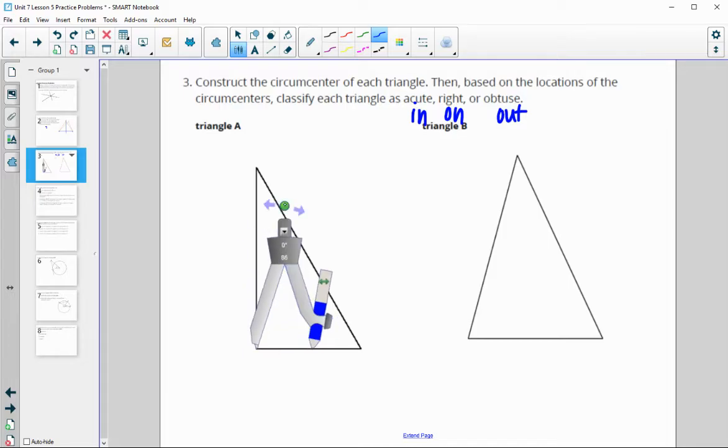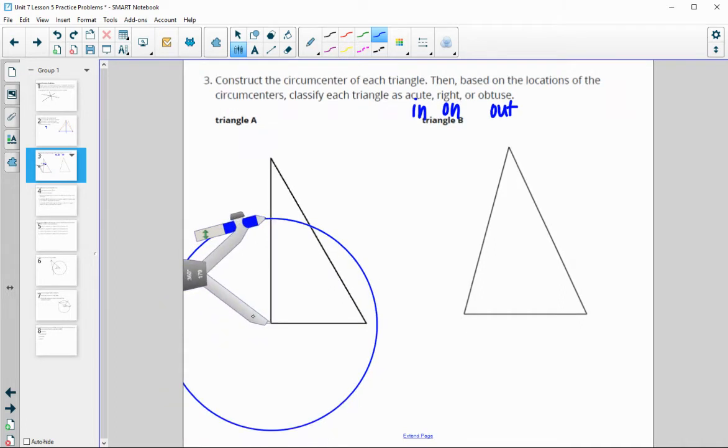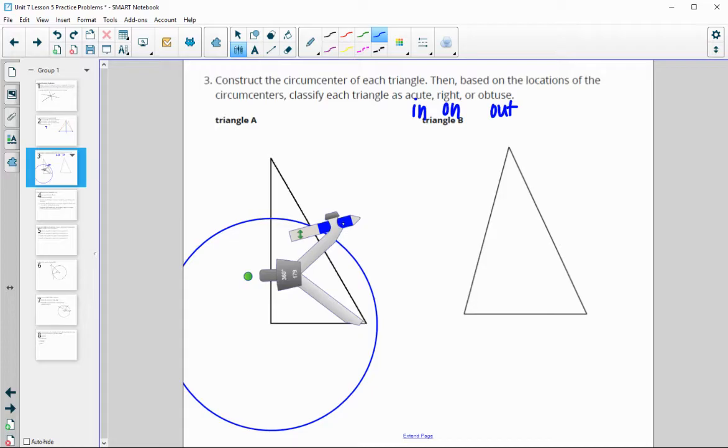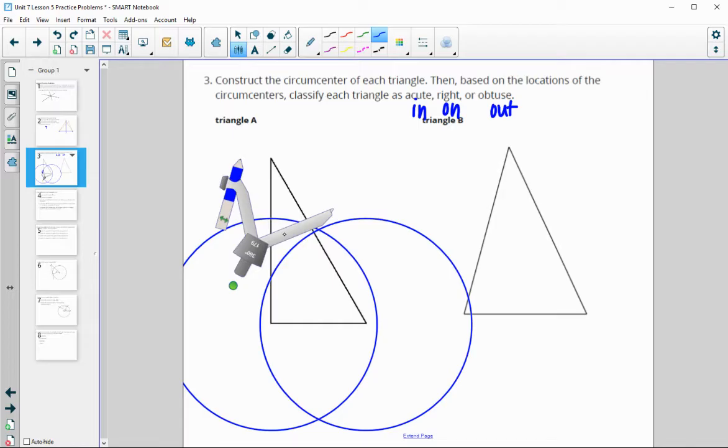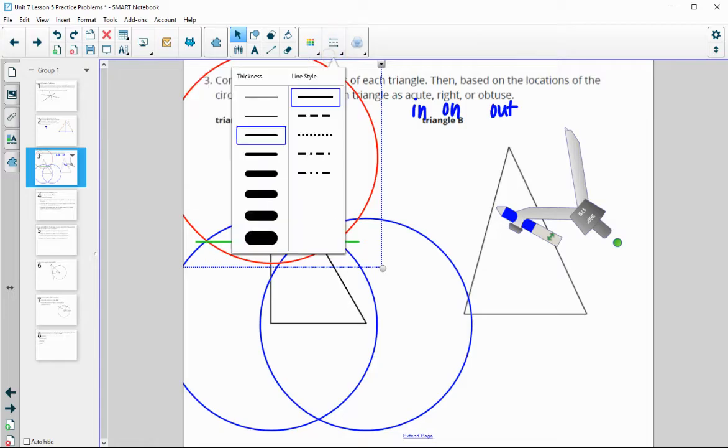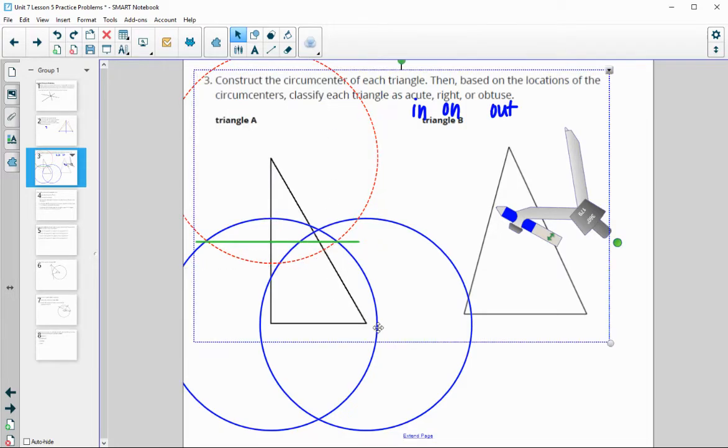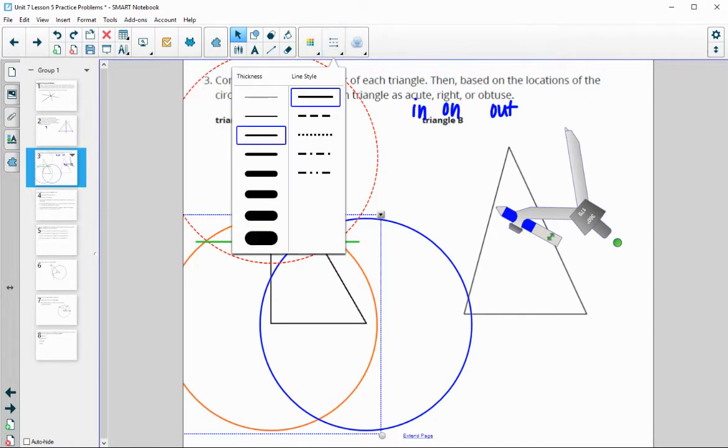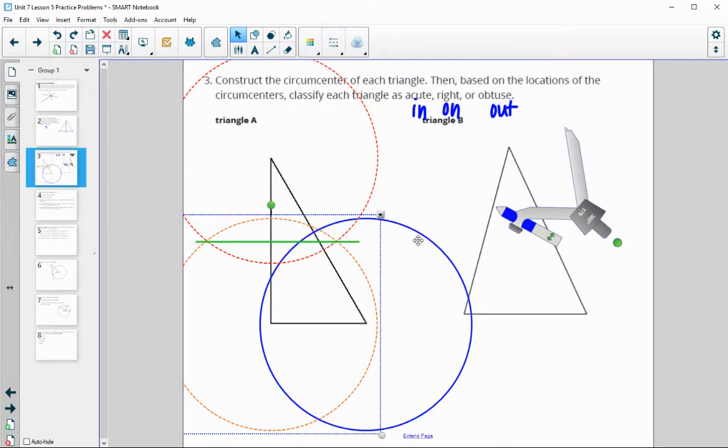Let's go ahead and construct some perpendicular bisectors here. I personally just like to open my compass to wider than halfway of the longest segment, and then just draw the circles around all three points, keeping the compass the same size. I'm just not going to change my compass size. I'm just going to draw it around all three vertices. That way, I've got the intersections of all of them that I can just connect.